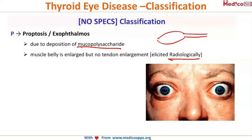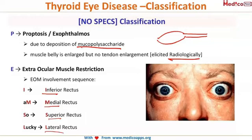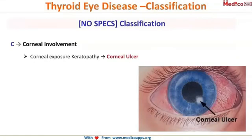E stands for extraocular muscle movement restriction. The first to be involved is the inferior rectus, followed by medial, then superior, and lastly the lateral rectus. The mnemonic for this is 'I Am So Lucky' — inferior rectus is the first muscle involved in thyroid ophthalmopathy, and lateral rectus is the last.